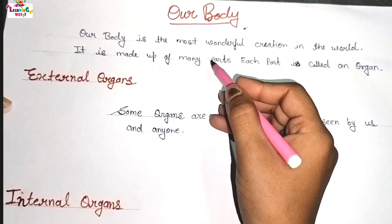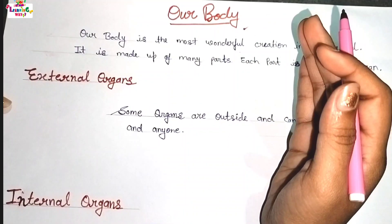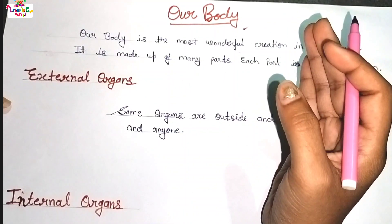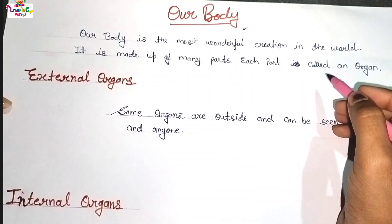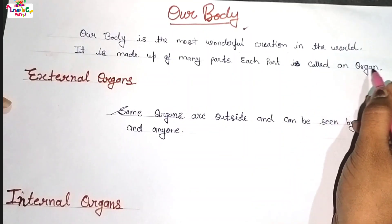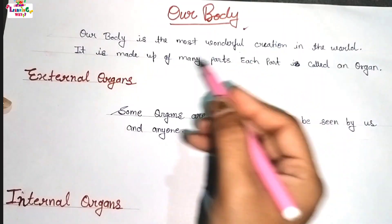It is made up of many parts. Here is a part of our body. Each part is called an organ. It is called an organ.